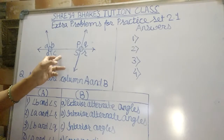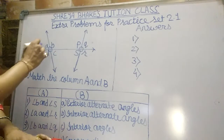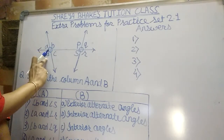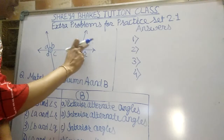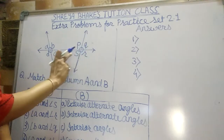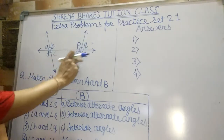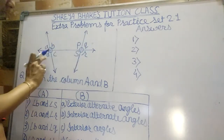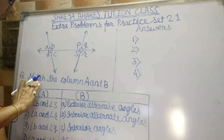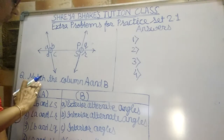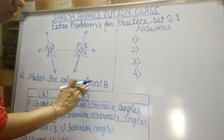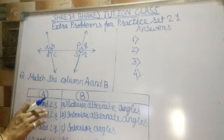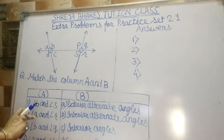This is our figure. On the figure: A, B, C, D and P, Q, R, S — these are the angles showing here. We are going to match the columns A and B.